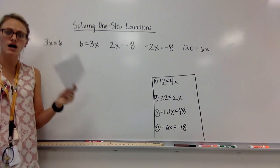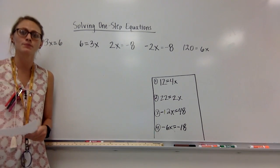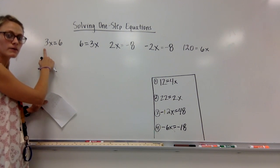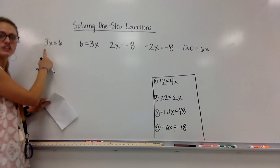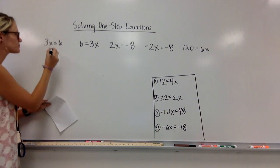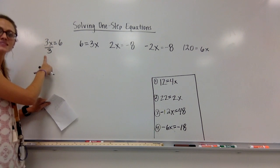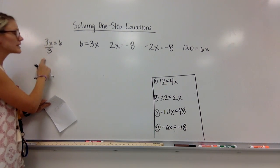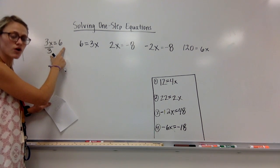In order to solve for x, we're just going to undo everything being done to it, which means we're just going to do the opposite. So right now, x is being multiplied by 3. The opposite of multiplication is division. So because x is being multiplied by 3, I need to undo that by dividing. So I'm dividing this by 3, undoing this multiplication. But if I do something on this side of my equal sign, I've got to do it on the other side.